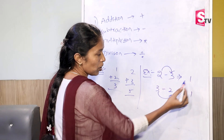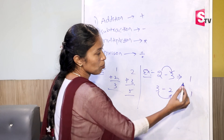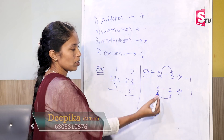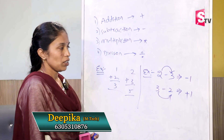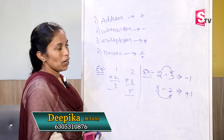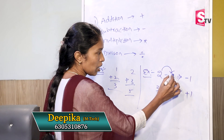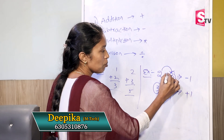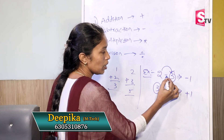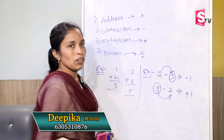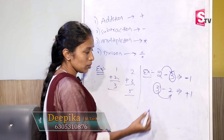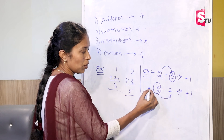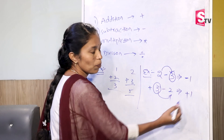So if there is a sign change, for 2 minus 3 the value is minus 1. For 3 minus 2, the value is plus 1. This is the main difference. The answer sign follows the highest number's sign. The highest number here is 3, and its sign is minus, so we get minus 1. In the other case, 3 has a plus sign, so we get plus 1.